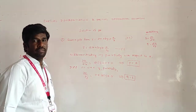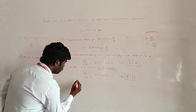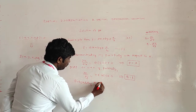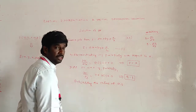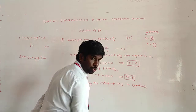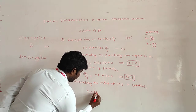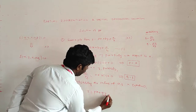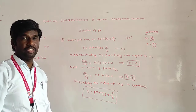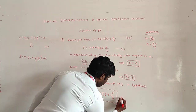To form the partial differential equation of this equation, we need to eliminate A and B from equation 1. So substituting the values of A and B in equation number 1: z = Px + Qy + P/Q. This is the required partial differential equation, which involves the partial derivatives P and Q.